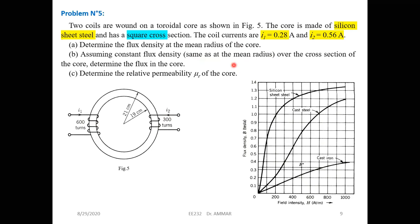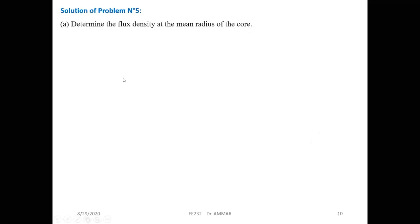The first question is to determine the flux density at the mean radius of the core — which is the mean path, mean length, or mean radius — assuming constant flux density at the mean radius over the cross section. Then determine the flux in the core. The last question is to determine the relative permeability of the core.